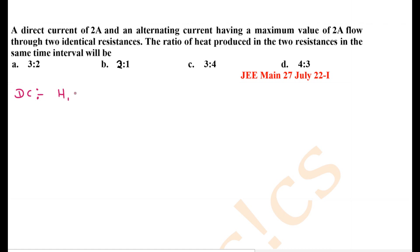Heat produced is I²RT. So H₁ is given as: I is 2, therefore 2² × R × T, which equals 4RT. In the case of AC, the heat produced will be calculated. Instead of I...